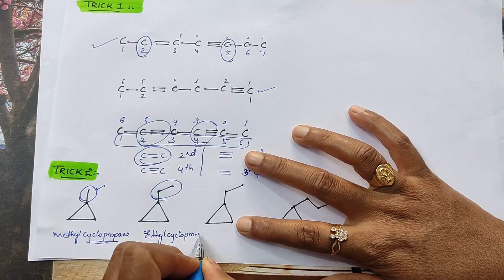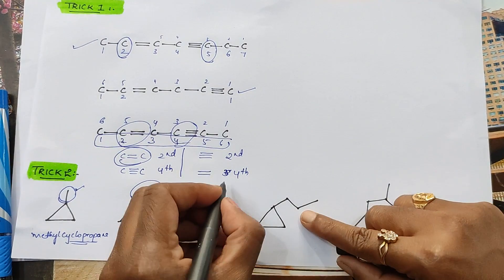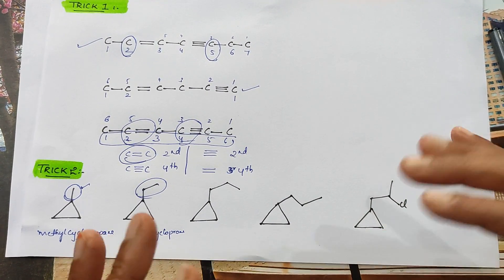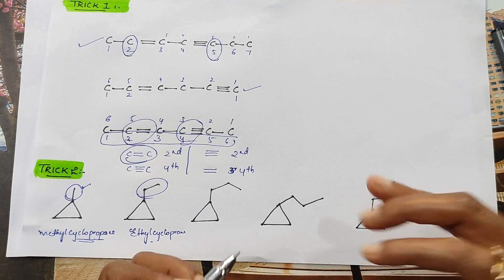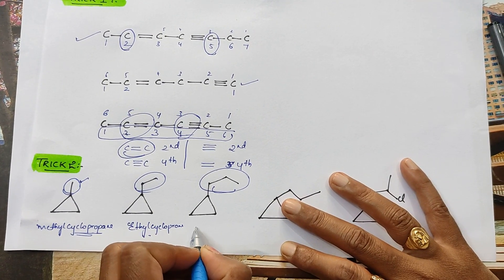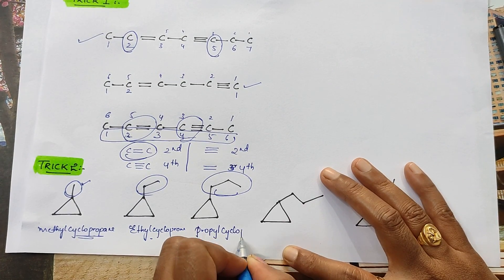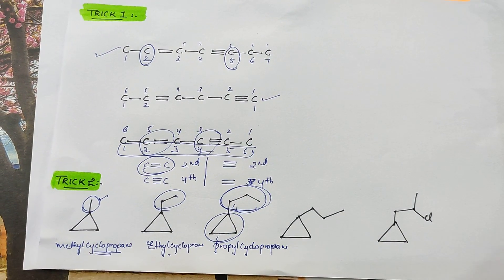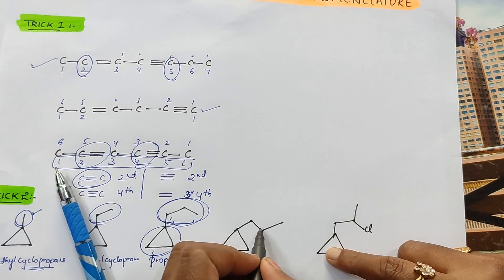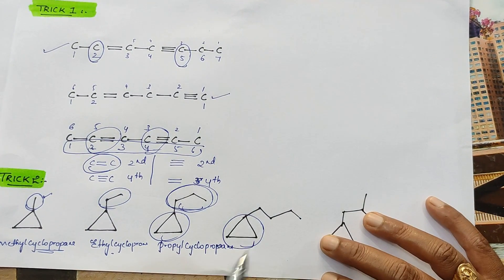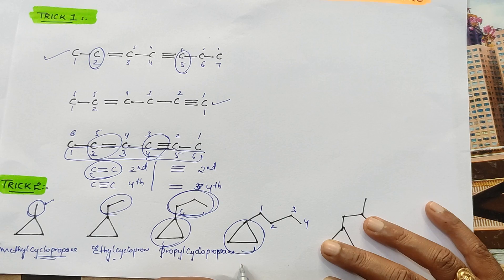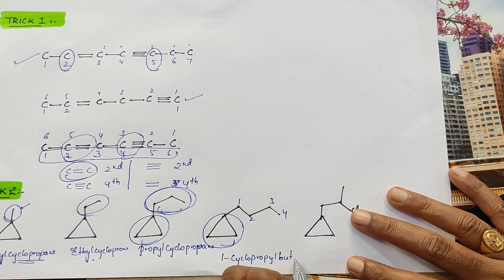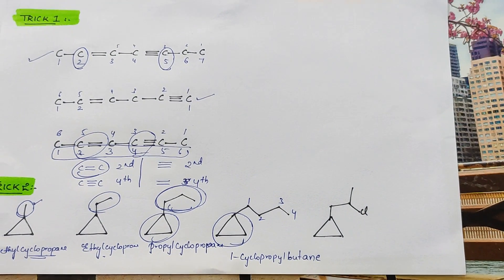When you have 3 carbons in the open chain and 3 carbons in a cyclic ring, you have to consider the open chain as your side chain. Its name is propylcyclopropane. Whenever the ring and side chain both have equal number of carbons, the ring is your parent chain. But whenever your open chain is having more number of carbons, like 4 carbons, in that case this ring becomes a side chain. Then you give numbering from the ring where it is connected — 1st position, cyclopropyl group is connected. Total 4 carbons are there, root word is but and all are single bonds. So its name is 1-cyclopropylbutane.